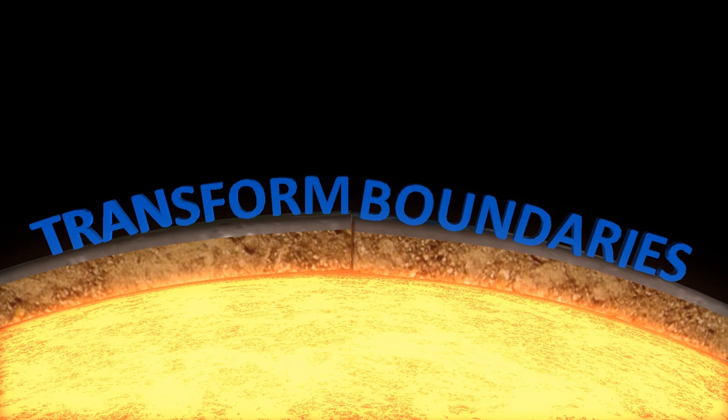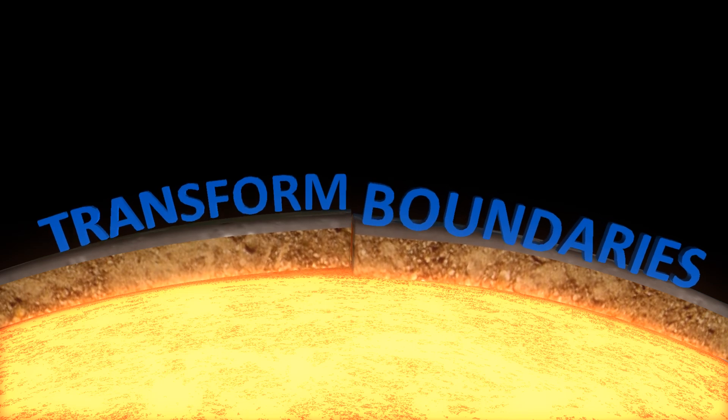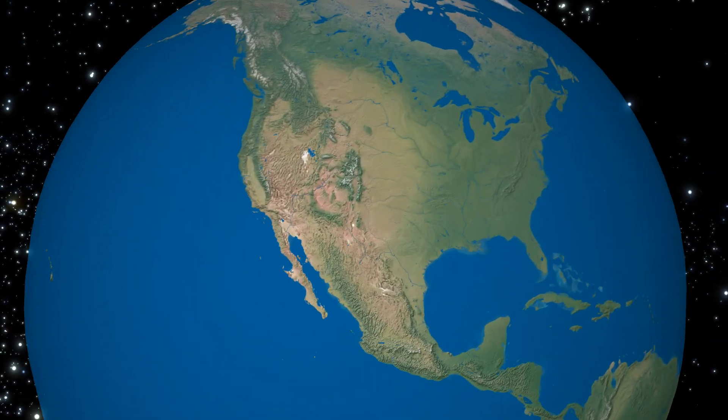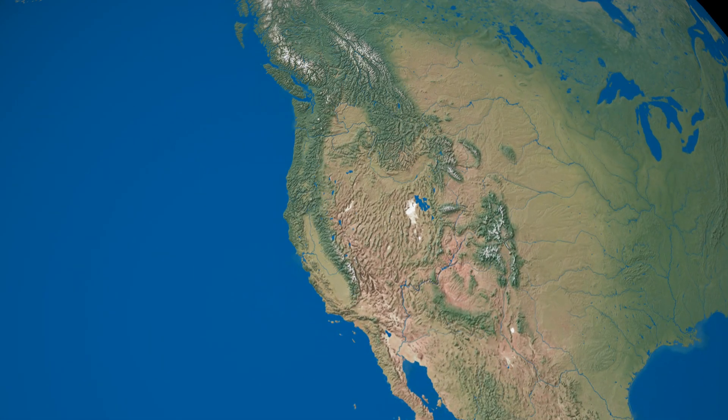At transform boundaries, plates aren't running into or pulling apart from each other. They just rub each other the wrong way. As the plates grind together, they generate earthquakes like the San Andreas Fault.